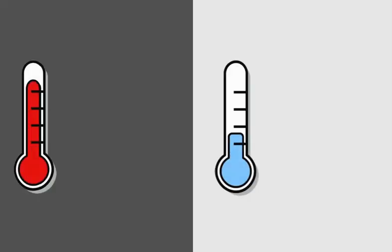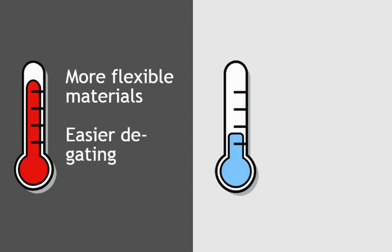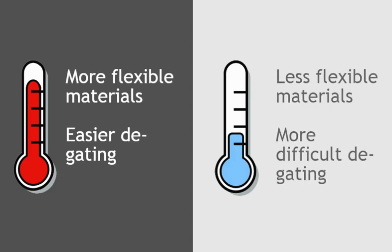Temperature is another consideration with cold runner sub-gates. Cold runners that are at higher temperatures during the ejection process will result in materials that are more flexible and therefore easier to degate, while lower temperatures will have the opposite effect.